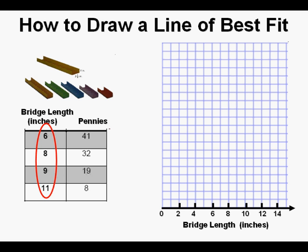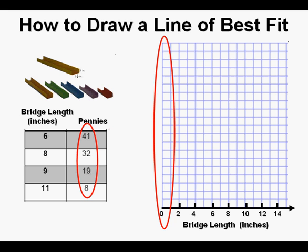With that done, we turn our attention to the data from our dependent quantity, the number of pennies until bridge collapse. Over here on the vertical axis, we have 20 squares available to us. If we went to one every two squares, dividing 41 by 2, we would need slightly over 20 squares, which we don't quite have.